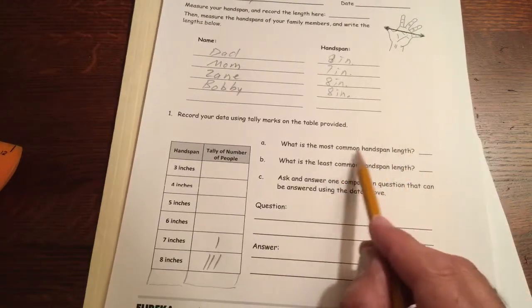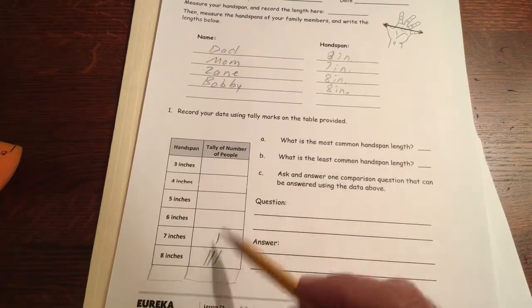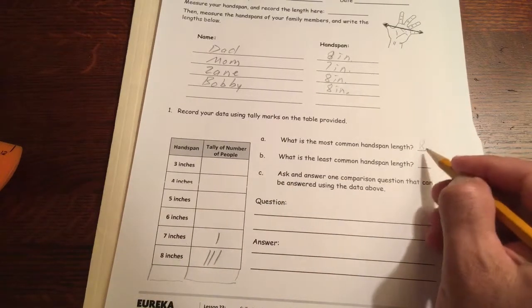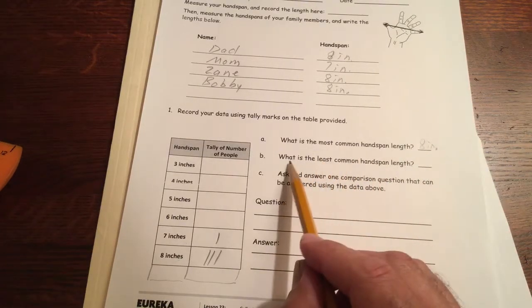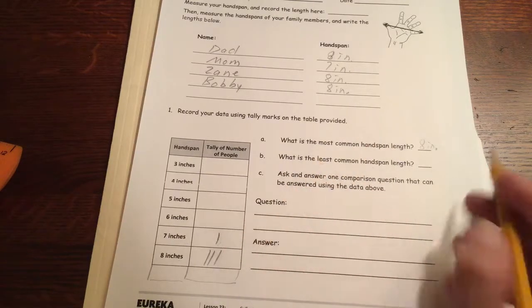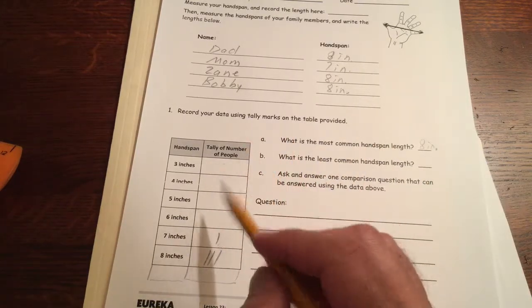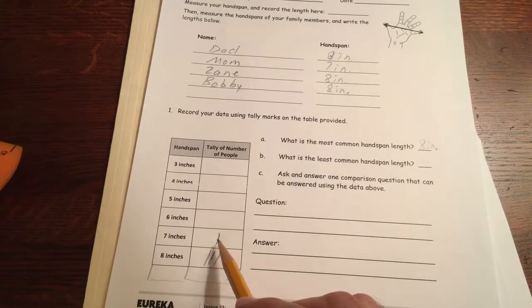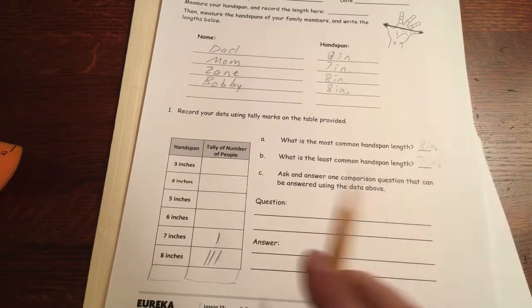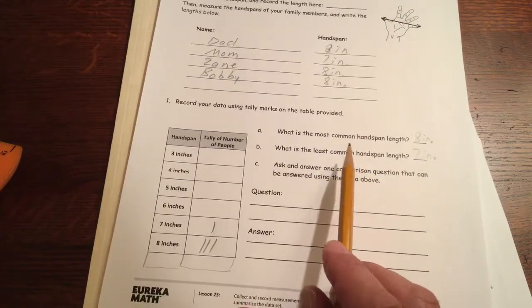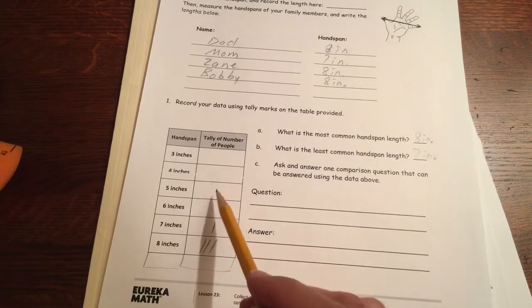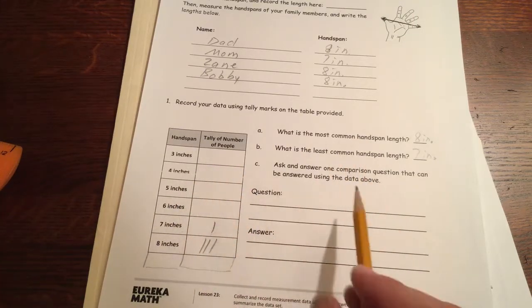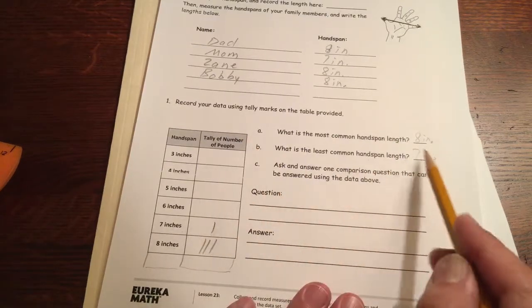So what is the most common hand span length? In this case I've got three of them that are the same. And that's eight inches. So there's more eights than any other number. So eight inches. And this is length so we want the units inch. What is the least common hand span length? There's only one seven. The zeros we're not going to consider those. Just the ones that measure because seven would be the one that had the least. So seven inches. I know that three didn't have any and four had zero. These were all zeros and those are less than one. But we're not going to count the measurements that didn't have anybody. So one seven three eights.